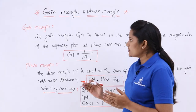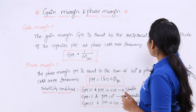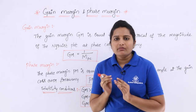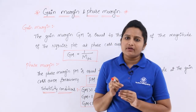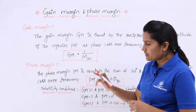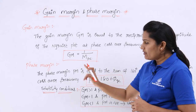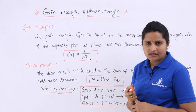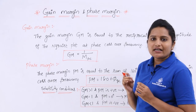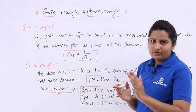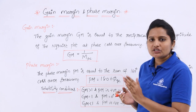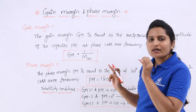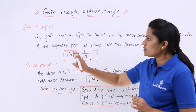Coming to gain margin, the gain margin is represented as GM. It is equal to the reciprocal of the magnitude of the Nyquist plot at the phase crossover frequency. That means GM = 1/Mpc, where Mpc represents the magnitude of the Nyquist plot at the phase crossover frequency. Phase crossover frequency is the frequency at which the Nyquist plot intersects the negative real axis. At this frequency, the reciprocal of the magnitude of the Nyquist plot gives you the gain margin.